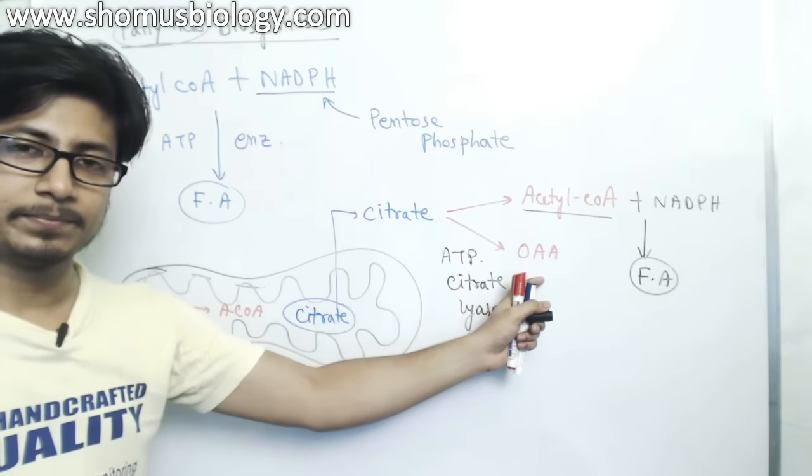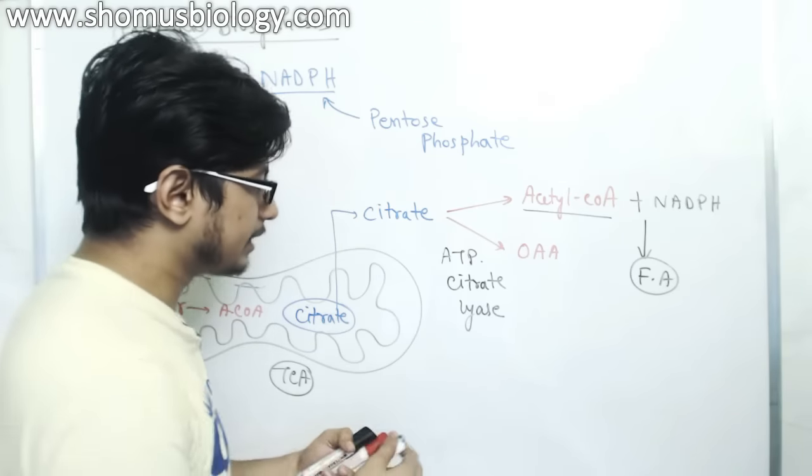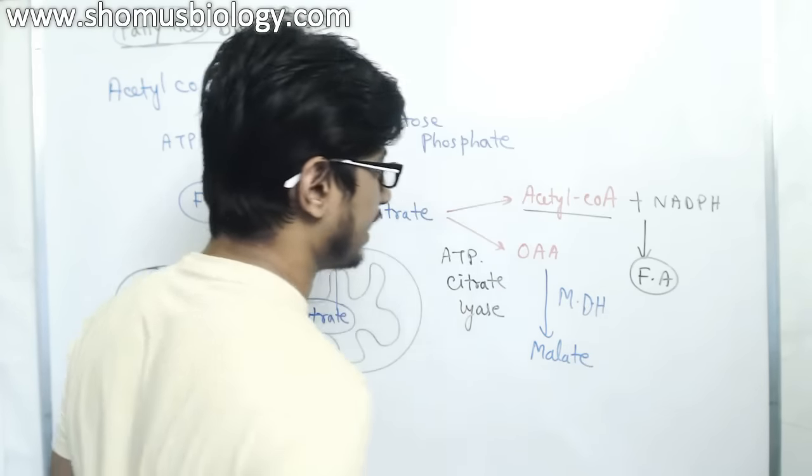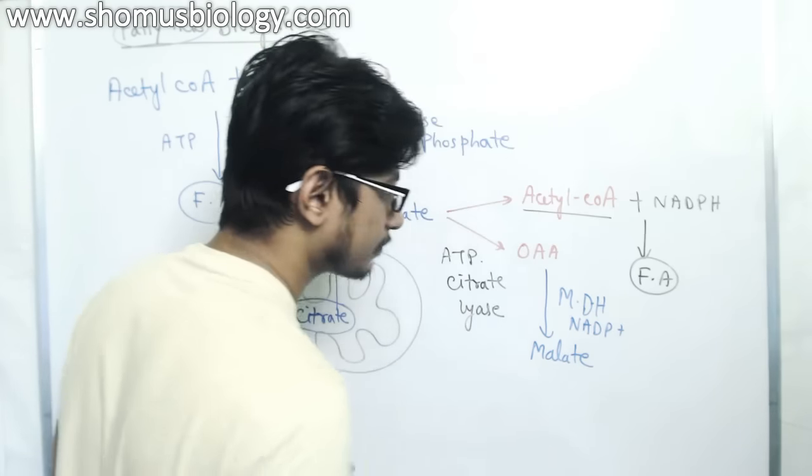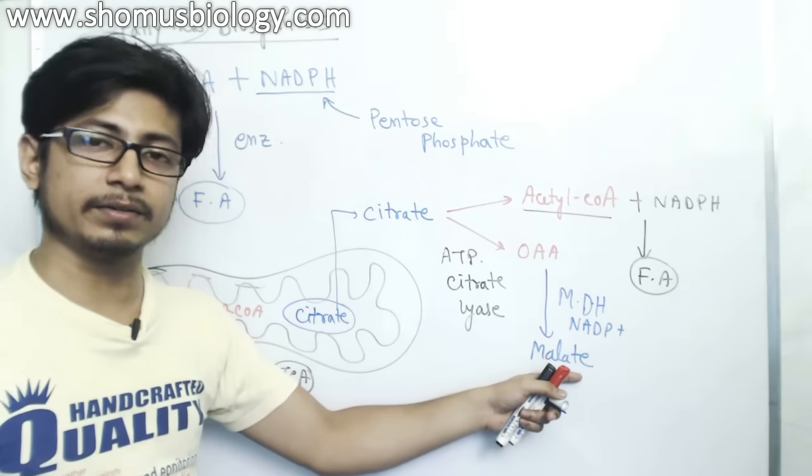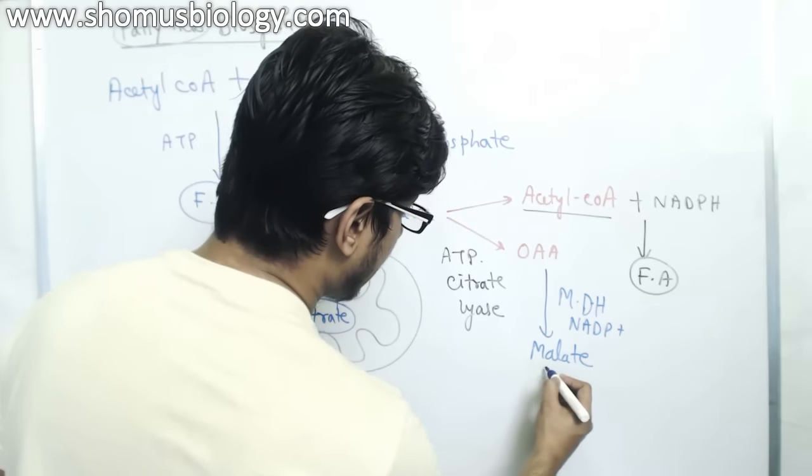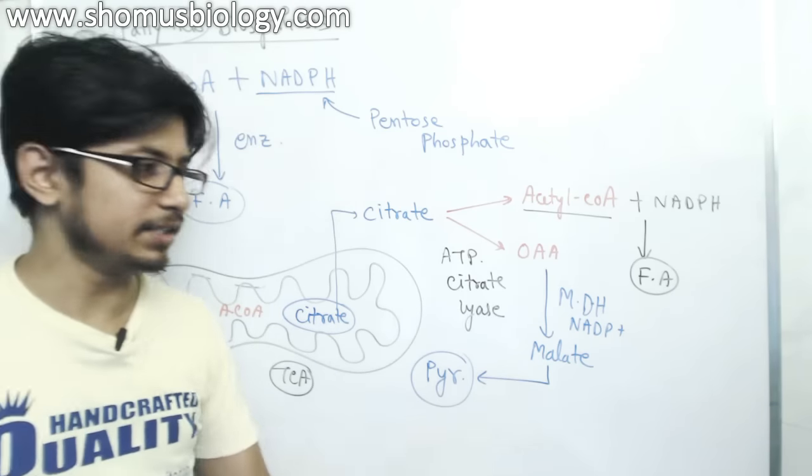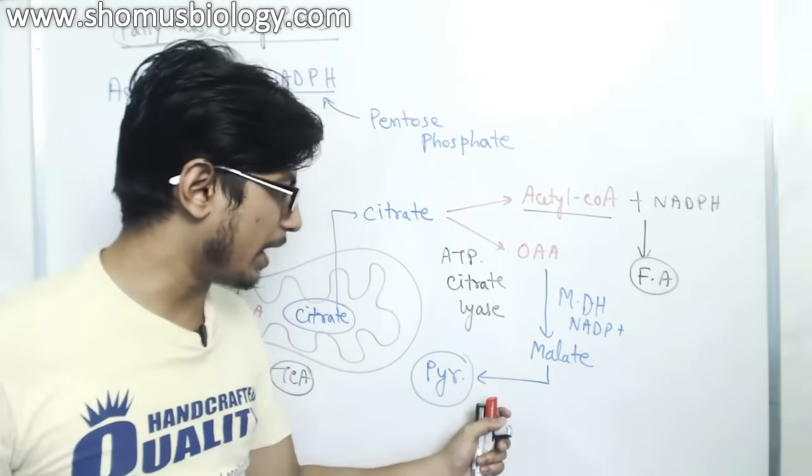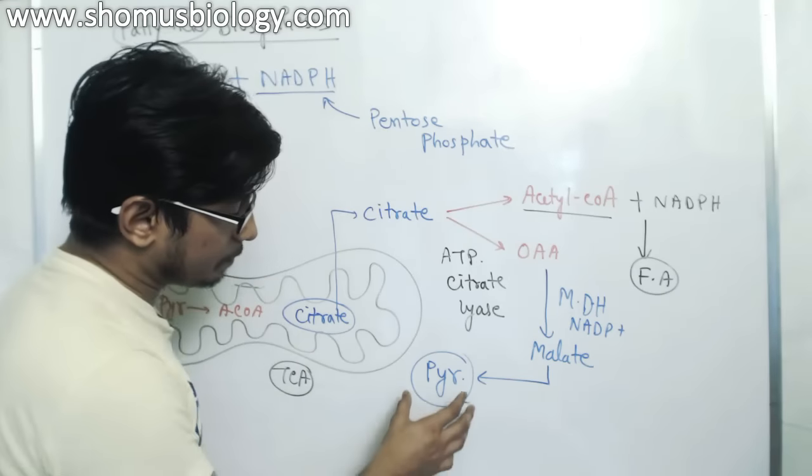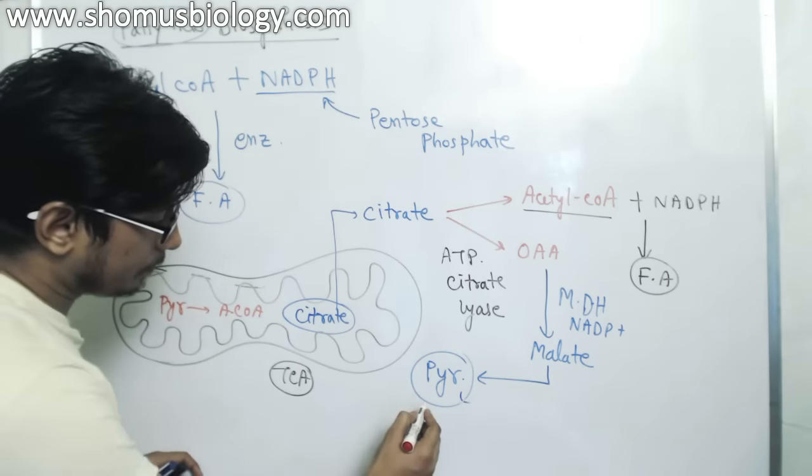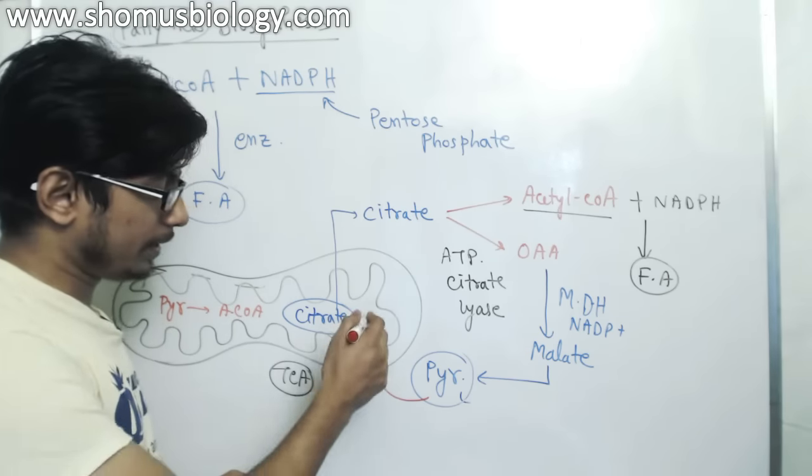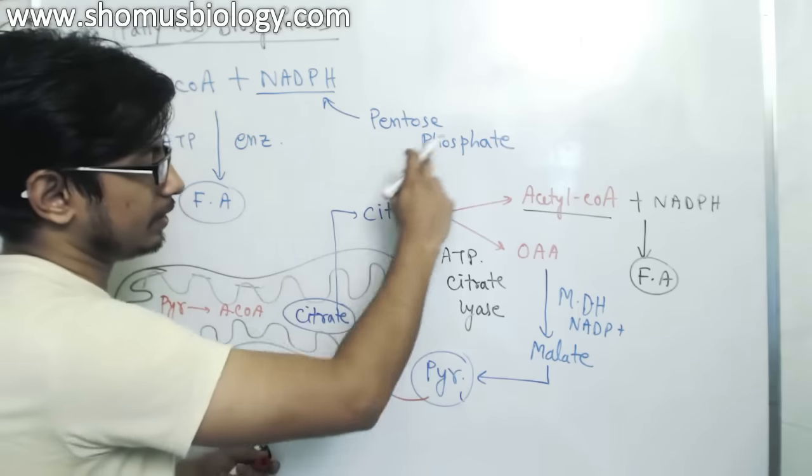But what about Oxaloacetate? We have Oxaloacetate in the cytosol now. So Oxaloacetate is further converted to Malate with the help of Malate dehydrogenase enzyme and NADPH. Oxaloacetate can be converted to Malate. And then later, we can utilize Malate to produce Pyruvate. In the later stages, Malate can be converted to Pyruvate. It can be converted back to Pyruvate. And once we make Pyruvate, then this Pyruvate can be taken inside the mitochondria. Because now the Pyruvate can be converted into Acetyl-CoA by Pyruvate dehydrogenase complex in the matrix of mitochondria.